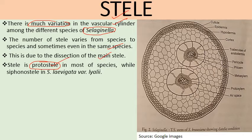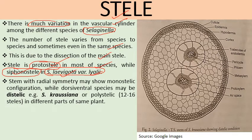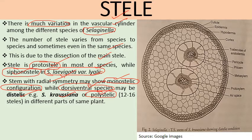Most species have protostele — central xylem surrounded by phloem. However, Selaginella laevigata variety lilii is siphonostelic, meaning the stele has a central pith. Stems with radial symmetry show monostelic configuration (single stele), while dorsiventral species may be distelic — for example Selaginella krausiana — or polystelic, with 12 to 16 steles in different parts of the same plant.